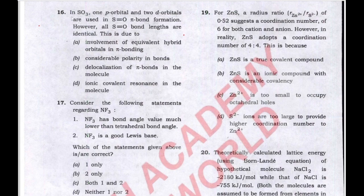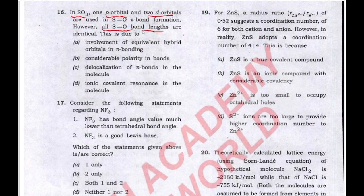Now we will start from the 16th question. In this question, they are asking that in the SO3 molecule, one p orbital and two d orbitals are involved in S=O pi bond formation. All S=O bond lengths are equal, and they are providing four reasons for that. We have to pick one correct reason.